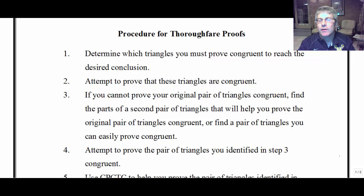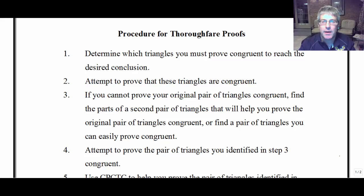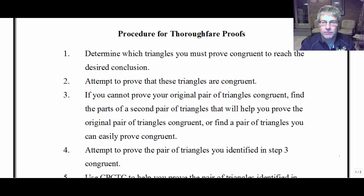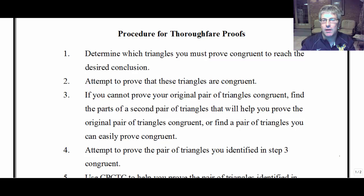We're going to now take this a step further and introduce a concept called detour proofs, or what I call thoroughfare proofs. And instead of proving just one pair of triangles congruent, we're going to have to prove a second pair of triangles congruent. So these proofs are going to be a little bit longer, a little bit more involved, and we'll use our first pair of triangles and CPCTC to help us prove the second pair of triangles and then achieve our goal.